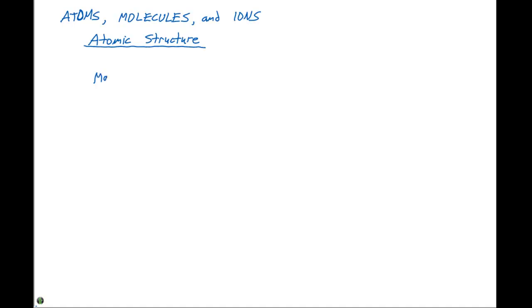So macroscopically, matter is classified in three ways, and we talked about this in chapter one. We have elements, we have compounds, and we have mixtures.